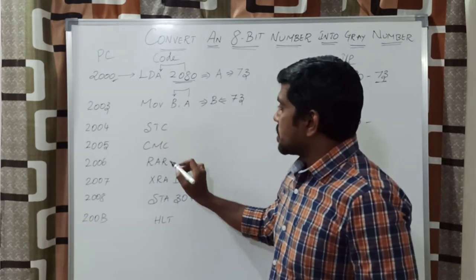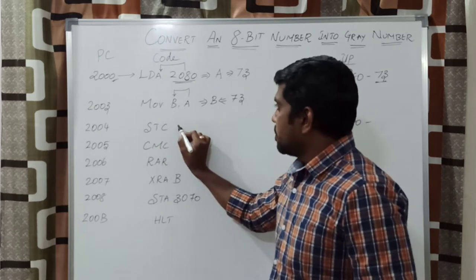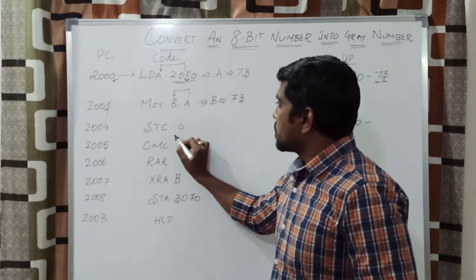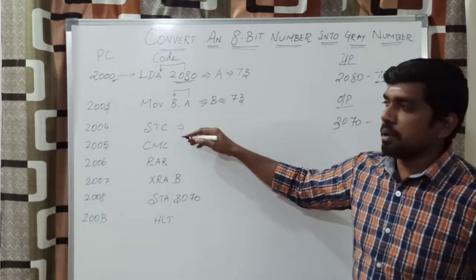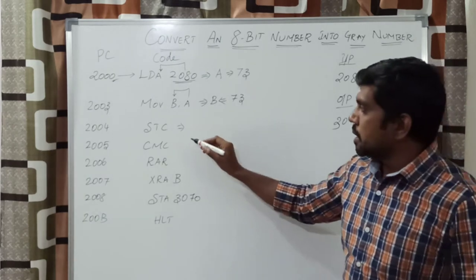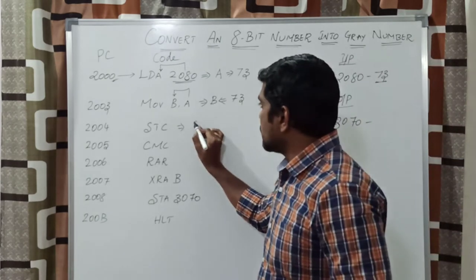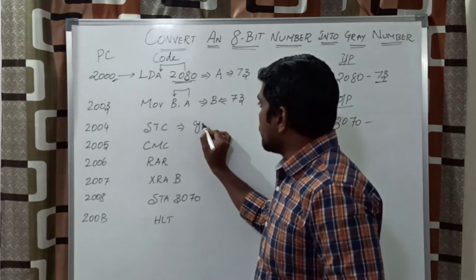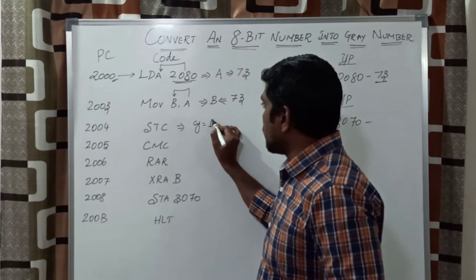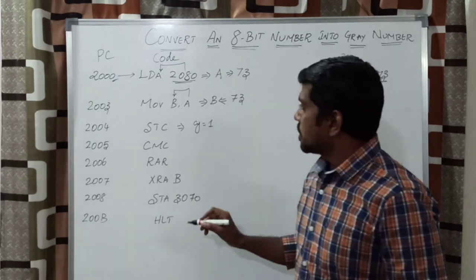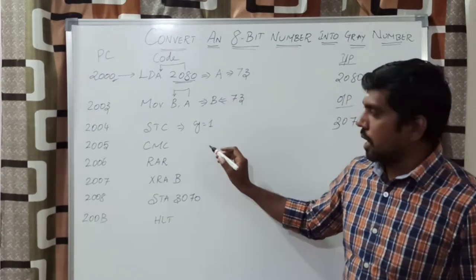The next instruction is STC, which means Set Carry. Before execution of this instruction, the carry value can be 1 or 0. But after execution of this instruction, the carry value must be 1. So the carry value is set to 1.